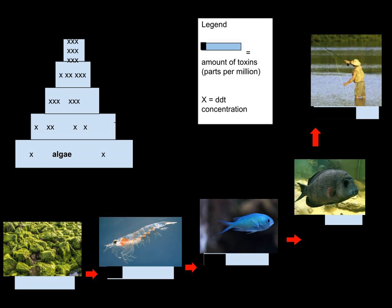Biodilution is also a process that occurs to all trophic levels in an aquatic environment. It is the opposite of biomagnification, occurring when a pollutant gets smaller in concentration as it progresses up a food web.